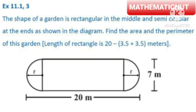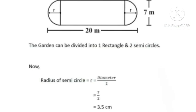The shape of a garden is rectangular in the middle and semi-circular at the ends as shown in the diagram. Find the area and the perimeter of this garden. Length of rectangle is 13 meters. Let's start the solution now.